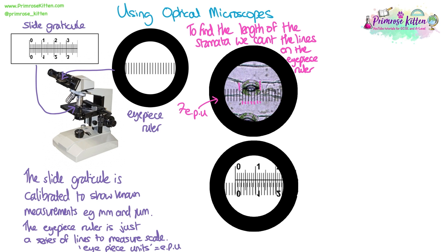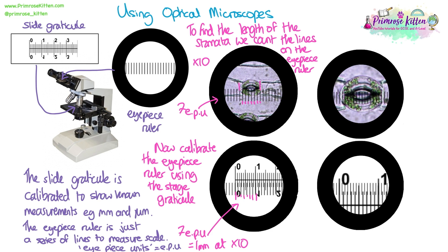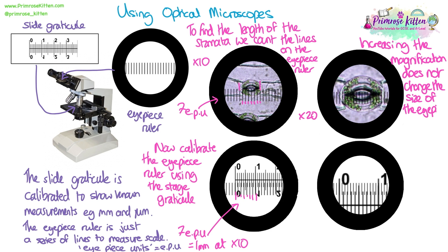I then remove the leaf tissue slide, replace it with my graticule slide, and line up the eyepiece ruler over the graticule ruler to see how many eyepiece units equals a known length. Here, my seven eyepiece units is the equivalent of one millimetre. It's important to remember that the actual size of the stomata doesn't change — you can view it at different magnifications. If we switch to a times 20 objective instead of times 10, I've effectively doubled the apparent size, so now the stomata measures 14 eyepiece units.